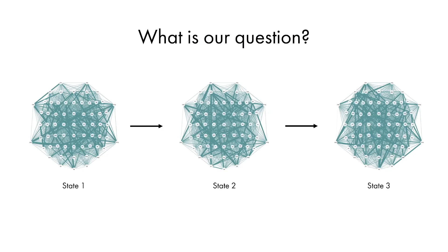What is our question? The brain could be viewed as a set of computational modules interchanging information with each other according to the demands of the environment. This information transition could be described in the connectivity approach — the synchronization between different brain areas marks the involvement of these areas in the current task.